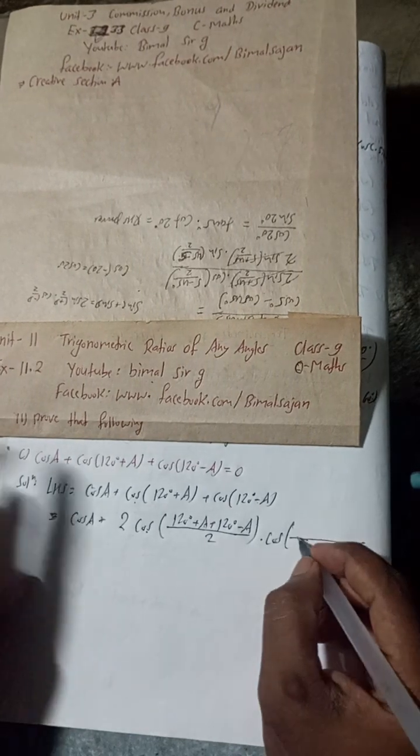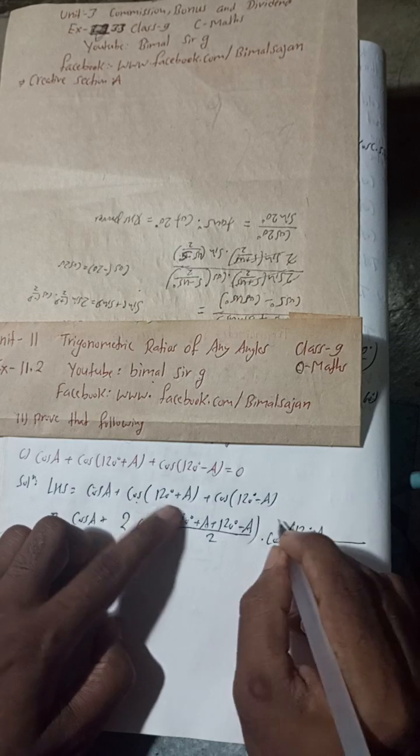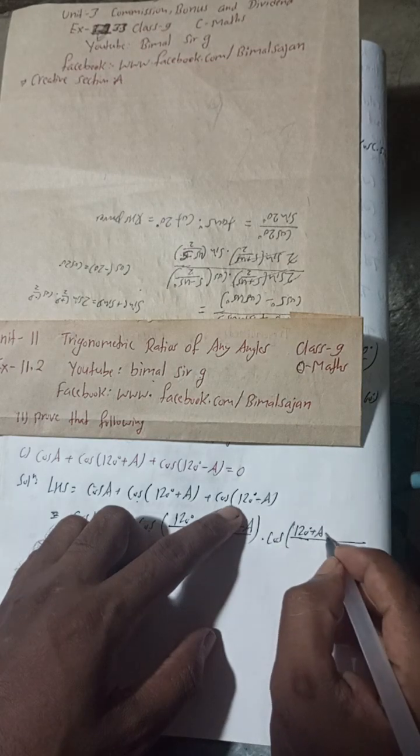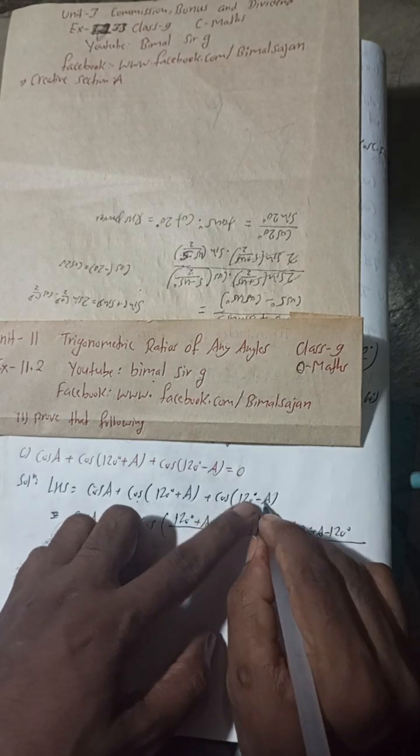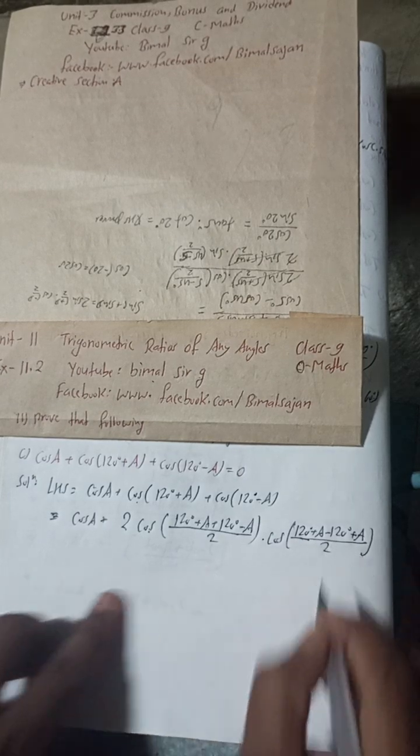Cos C minus D. So C minus D means C there. This is 120 degree plus A. This is C. And minus D means what? This is plus 120 means minus 120 degree and minus A means plus A by 2. Got it?